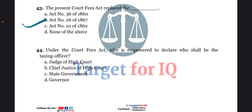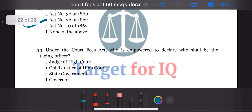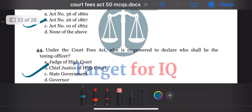Next question: under the Court Fees Act, who is empowered to declare who shall be the taxing officer? The options are A. Judge of High Court, B. Chief Justice of High Court, C. State Government, or D. Governor. The correct answer is option B. Chief Justice of High Court.